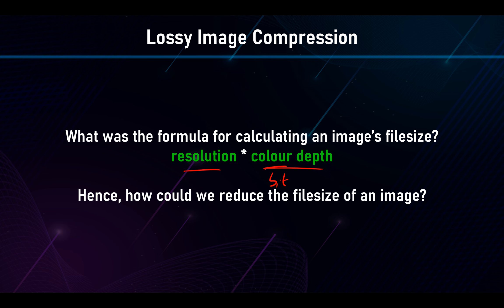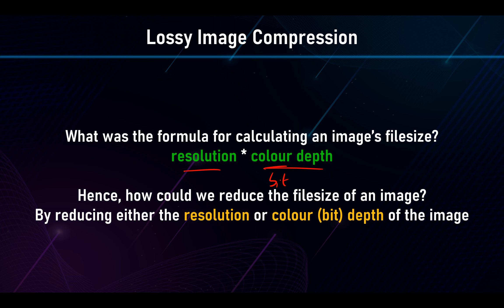For lossy image compression, think about the formula for calculating an image's file size: resolution × color depth (also called bit depth). We can reduce either of these to reduce the overall file size. Reducing resolution means using fewer pixels — making the image smaller. Reducing color depth means using fewer bits per pixel, giving an overall lower number of colors in the image.